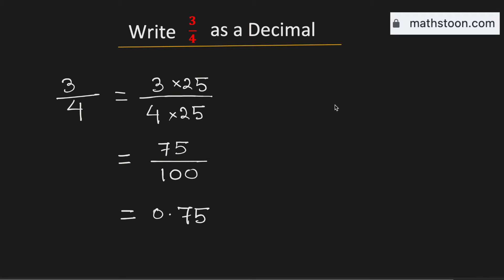Now we can express 3/4 as a decimal using the division method as well. For that, we need to divide 3 by 4. We know that 4 cannot go into 3, so we need to bring one zero here. For that, we need to put a decimal.